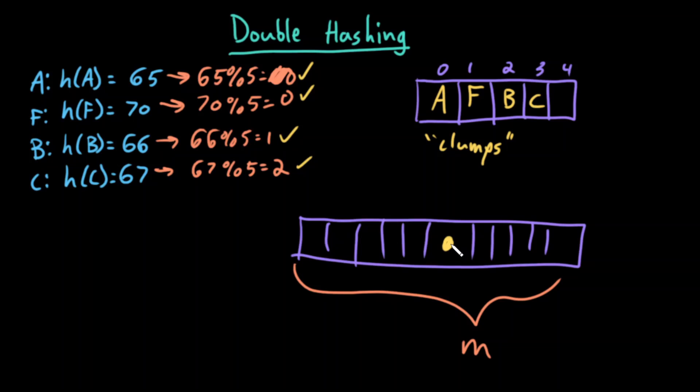Now I do my second insertion. I have a 1 over M chance of inserting in the clump versus M minus 1 over M probability of not inserting in the clump. Right now the probability of hitting this clump is 1 over M.